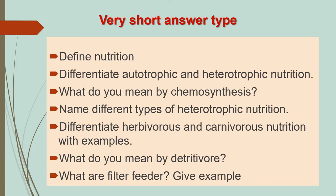Next is: differentiate autotrophic and heterotrophic nutrition. Third is: what do you mean by chemosynthesis? Next is: name different types of heterotrophic nutrition. Next is: differentiate herbivorous and carnivorous nutrition with examples.